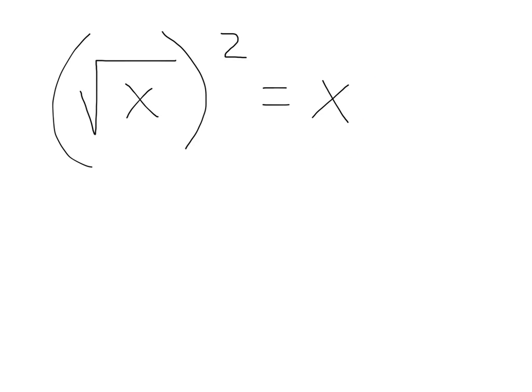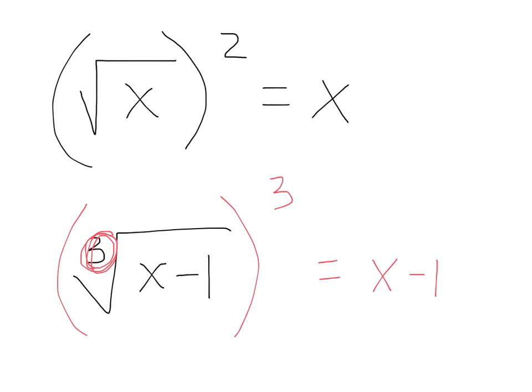Let's say I have the cubed root of x minus 1, and then I take it and I cube it. What does that give me? x minus 1. Just x minus 1. The cubed root right here and the cubed right there offset each other and all it leaves you with is the x minus 1.